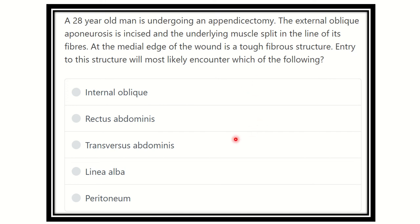Hey everyone, welcome to another question and answer session. A 28-year-old man is undergoing an appendectomy. The external oblique aponeurosis is incised and the underlying muscle is split in the line of its fibers. At the medial edge of the wound is a tough fibrous structure. Entry to this structure will most likely encounter which of the following?